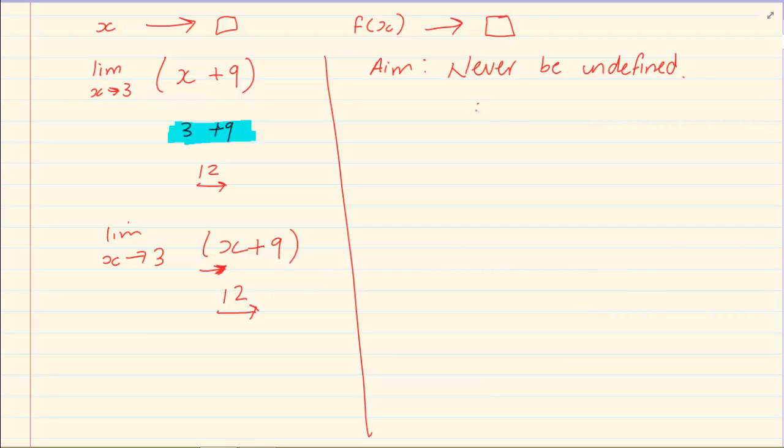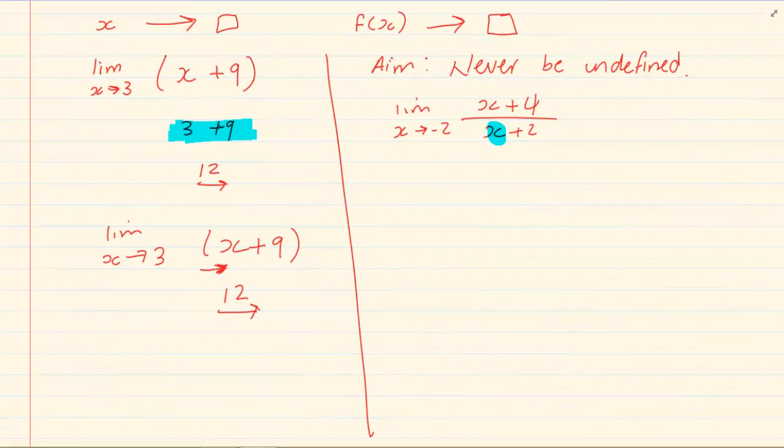Which means if I had a sum like x plus 4 over x plus 2, but we had a limit x tends to be minus 2. In limits, our aim is that once we substitute, the equation must never be undefined.